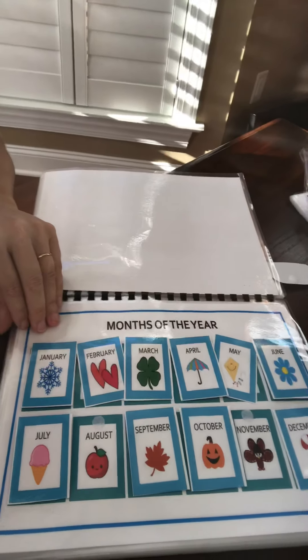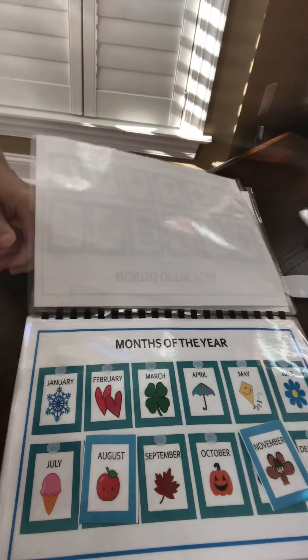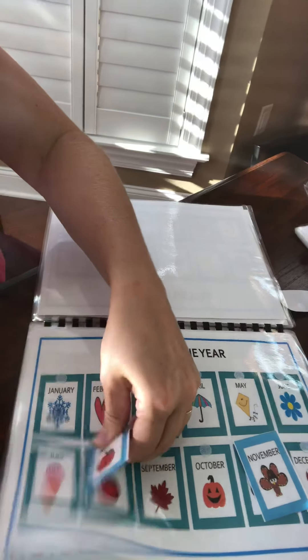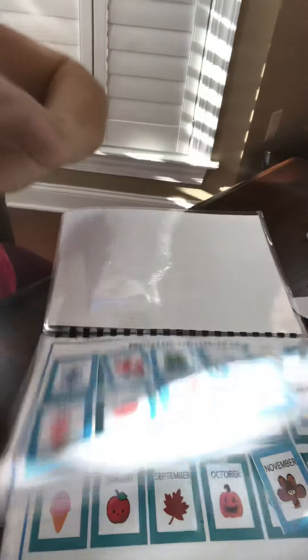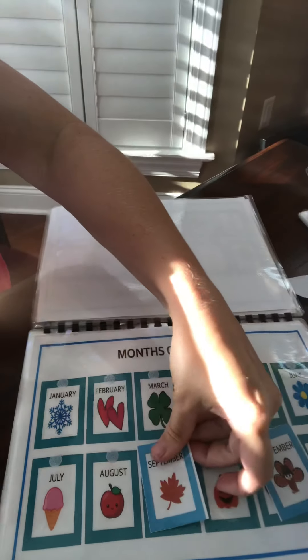And here we have seasons. So, again, the consecutive pages, you don't have to do that. I mean, we can just, just learning that it's September, so show me what month it is, September.